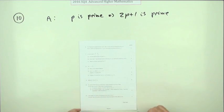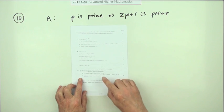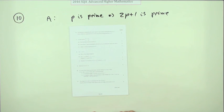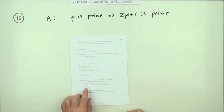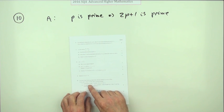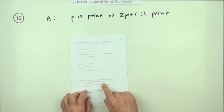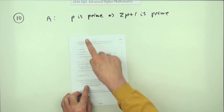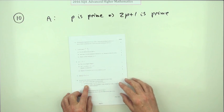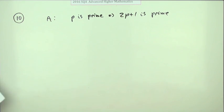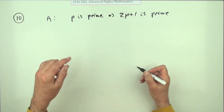Number 10 from the 2016 Advanced Higher Maths. A little proofs question for four marks, probably not two marks - probably one mark for A and three marks for B because it says if it's true give a proof, if it's false give a counterexample. The first part: P is prime means 2P plus 1 is also prime.